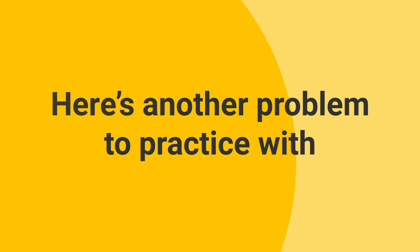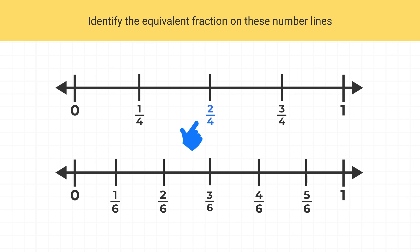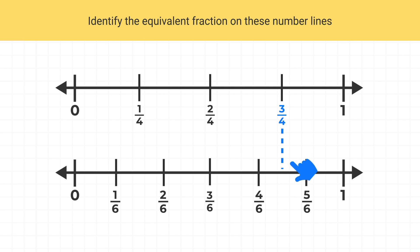Here's another problem to practice with. What equivalent fractions can we identify on these two number lines? Let's start by looking at one fourth — what fraction is at the exact same spot as one fourth? If you trace your finger down, you can see that no fraction is at the exact same spot as one fourth. So no fraction on these number lines is equivalent to one fourth. What about two fourths? We can see that three sixths is at the same spot as two fourths, so two fourths is equal to three sixths. What about three fourths? There's no fraction on these number lines at the same place as three fourths. So the only equivalent fraction on these number lines is two fourths and three sixths.